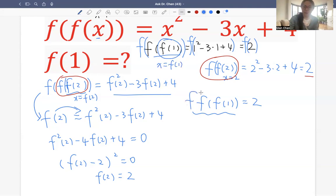So take this one. Then f of 2 equals to 2 from here, right? So from the function, from the function, if we let x equals to f of 1, what do we get? We get f of 1 squared minus 3 times f of 1 plus 4. That equals to 2.